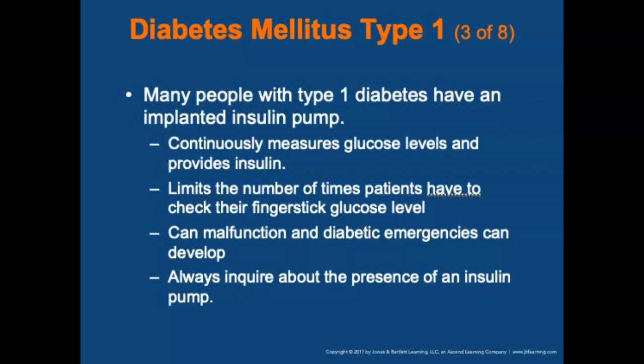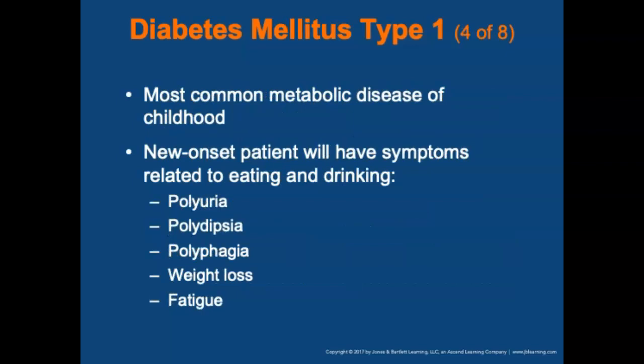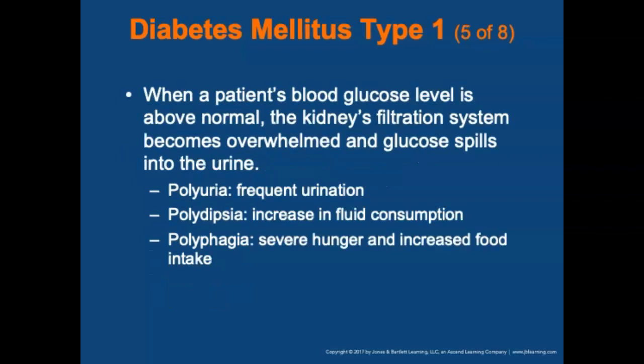Type 1 diabetes is the most common metabolic disease of childhood. A patient with new onset of type 1 diabetes will have symptoms relating to eating and drinking: polyuria, polydipsia, polyphagia, weight loss, and fatigue. When the patient's blood glucose level is above normal, the kidney's filtration system becomes overwhelmed and glucose spills into the urine, resulting in those symptoms.